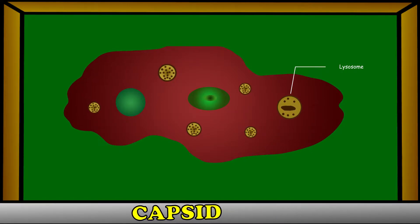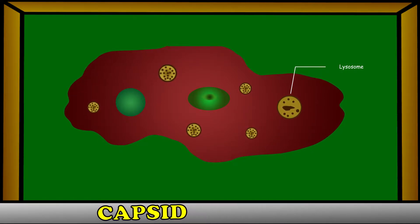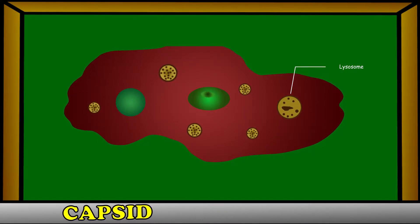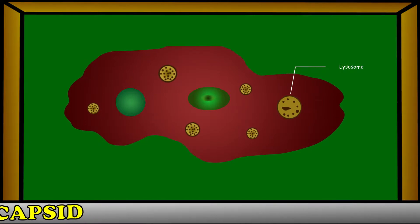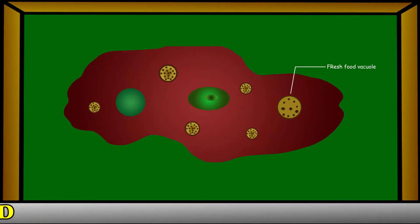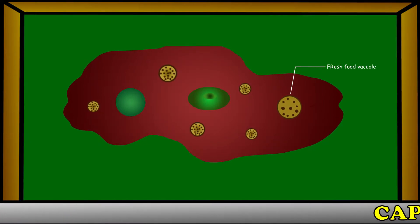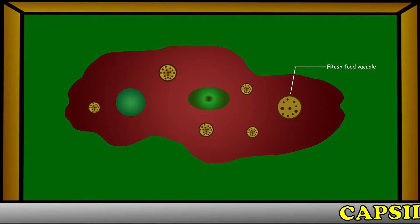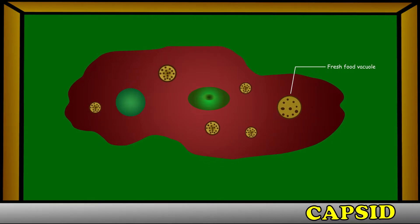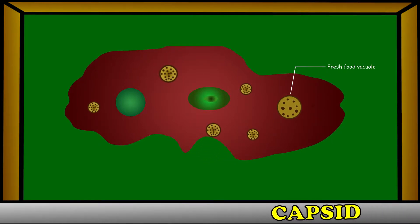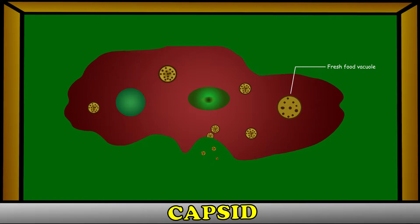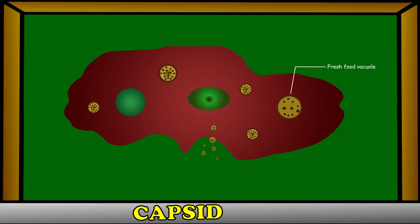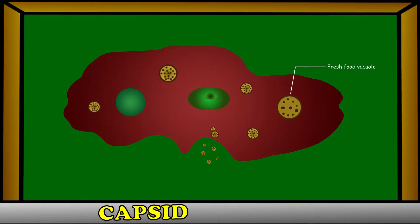After the digestion of food, the process of absorption and assimilation takes place within the cell. The undigested residue gets expelled out by exocytosis from any point of the body surface.